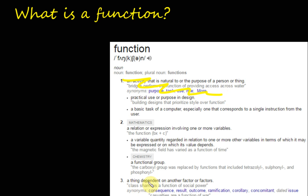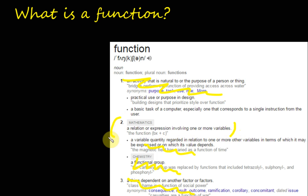And a thing dependent on other factors — that's not it. Chemistry — no. I ended up getting down to the mathematical description: a relational expression involving one or more variables. And that's mathematics, fair enough. I thought, well, actually, I can explain functions using mathematics first, and then show you how that would work with a computer.